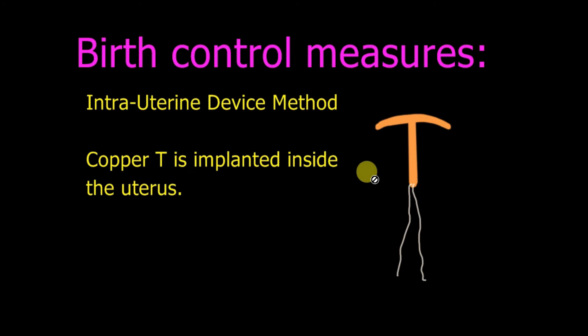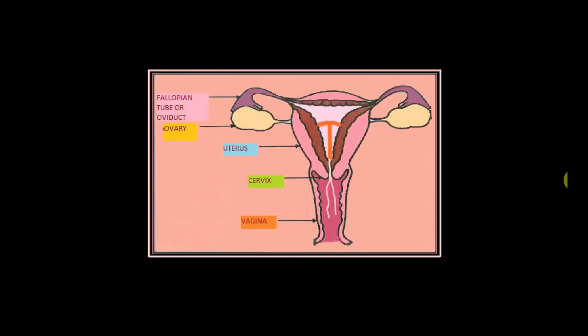The next method is the intra-uterine device — the copper T. Looking at the diagram of the female reproductive system, the copper T is implanted inside the uterus. It helps avoid pregnancy for three to five years. It is a temporary method, but it can cause irritation to the female and some side effects.